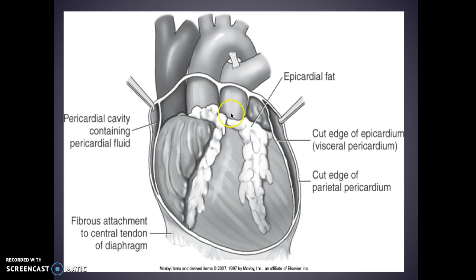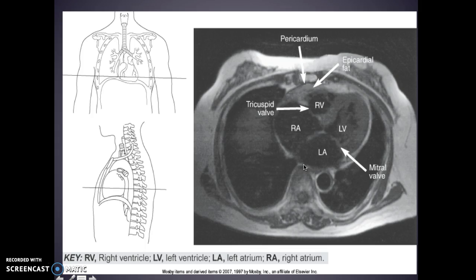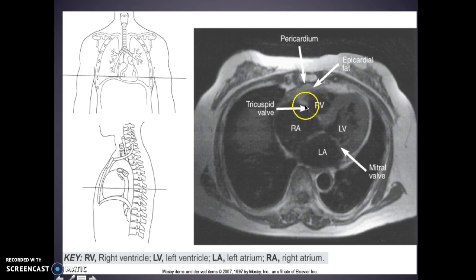Within the heart we have epicardial fat — fat on all our organs to protect them. This is your visceral pericardium and this is your parietal pericardium, just like in the chest, and it contains fluid. If there's a fluid collection within here — whether it's blood or fluid — it compresses the heart so the heart cannot beat and the patient dies. This is MRI T1 — you can see that little black stripe. Here's your right ventricle, left ventricle, you can see how thick the muscle is, and then here's your left atrium with your right atrium. The tricuspid and mitral valves are there.